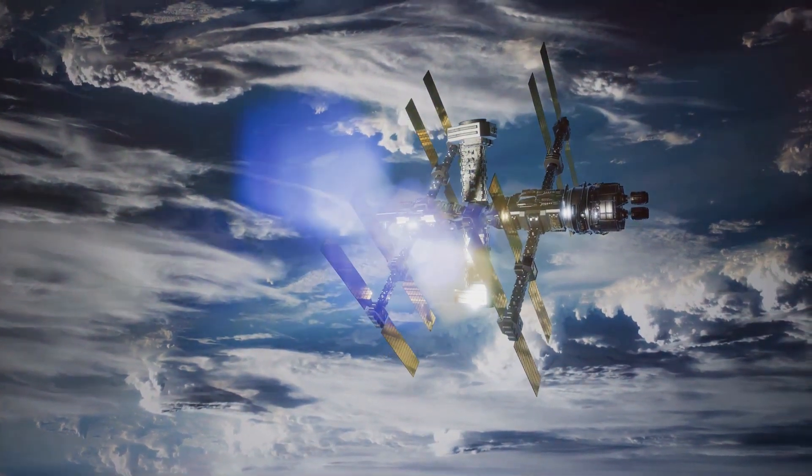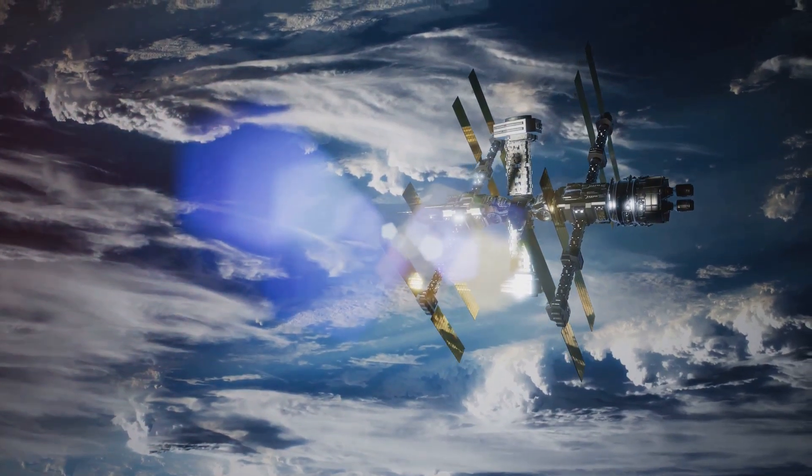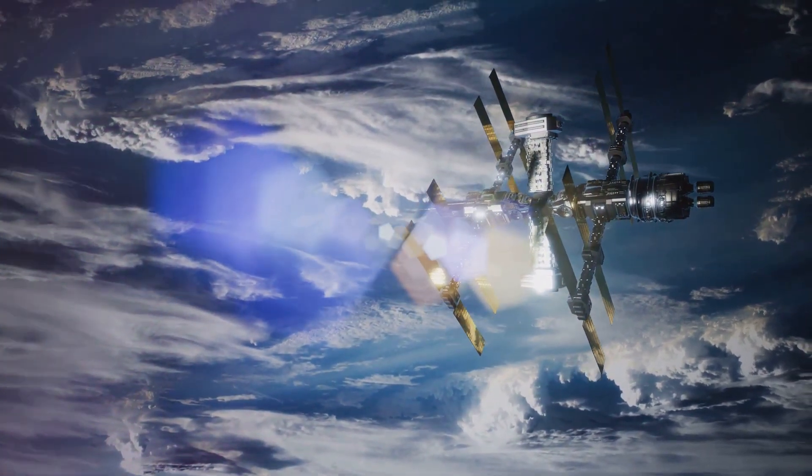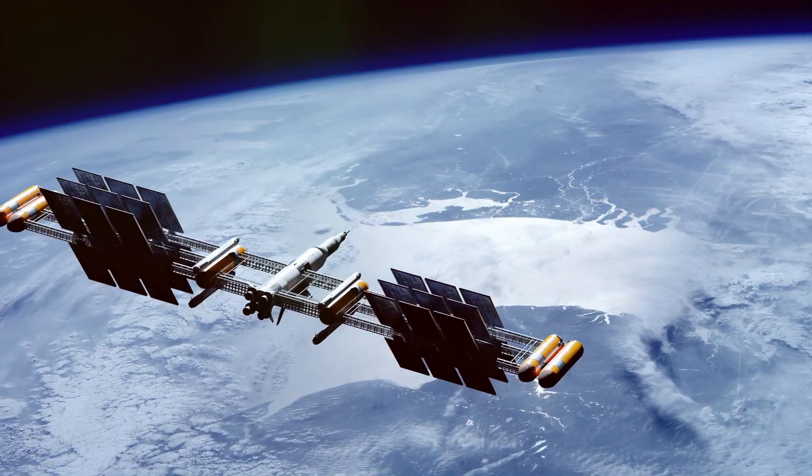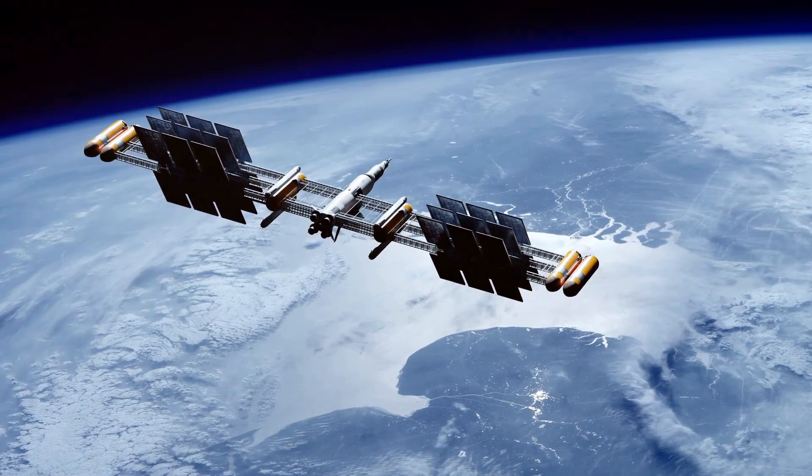And let's not forget about robotic arms. These high-tech manipulators are designed to latch onto larger pieces of junk. Once they've got a grip, they can guide the debris down into a controlled re-entry, ensuring it doesn't pose a threat to any other objects in orbit.